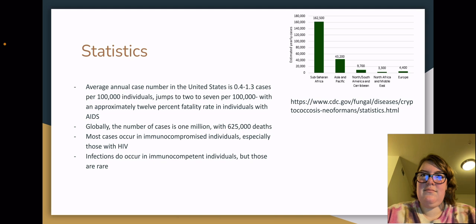The average annual number of cases in the United States is 0.4 to 1.3 cases per 100,000 individuals. In the population with AIDS, this jumps to 2 to 7 per 100,000 individuals with an approximately 12% fatality rate. Globally, the number of cases results in 1,625,000 deaths. Most cases occur in immunocompromised individuals, especially those with HIV, such as those represented in the graph in the corner. Infections do occur in immunocompetent individuals, but those are rare.